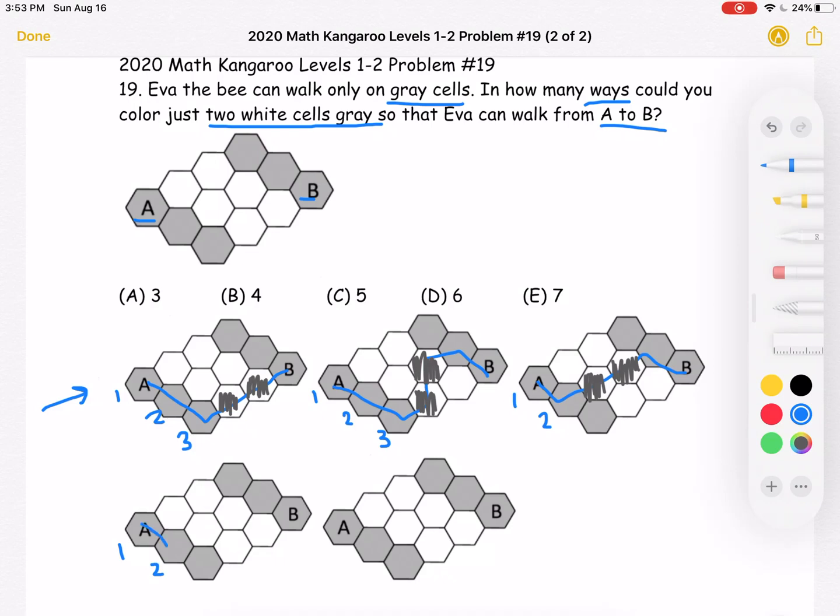Or we could go from A to cell 2, and then go as so, and we're going to have these two cells colored gray.